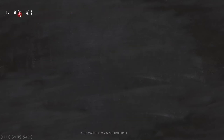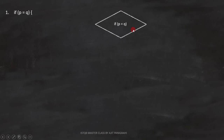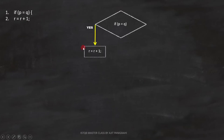Line number 1 is: if p equals q. Since this is a condition, we can represent it like this. Line number 2 is r equals r plus 1. It will execute when the if condition is true. Since this is a statement, we can represent it like this in the flowchart.